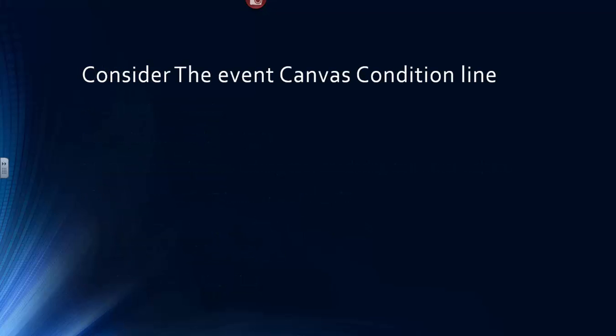Consider the Event Canvas Condition Line. It's an object containing other objects that you modify. The Event Canvas Condition Line has events which can contain an object called sets.